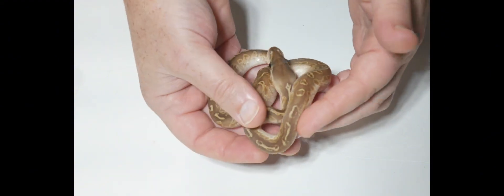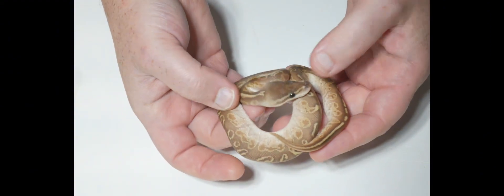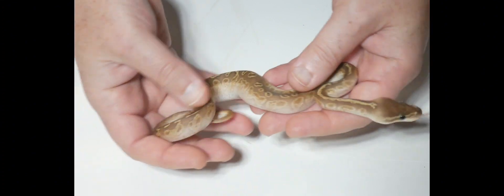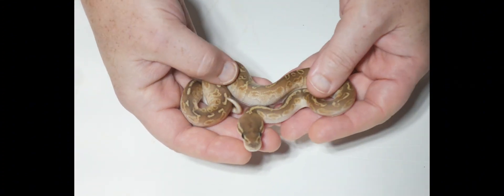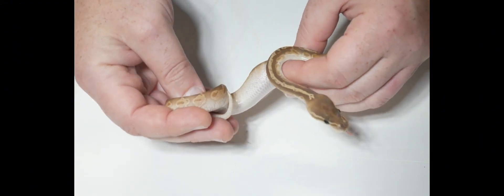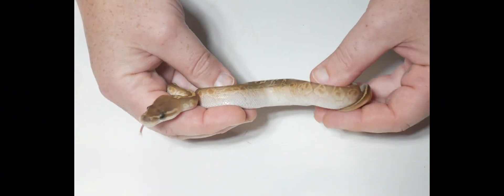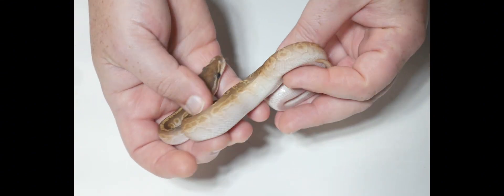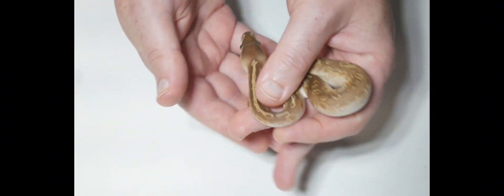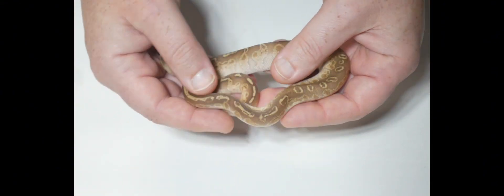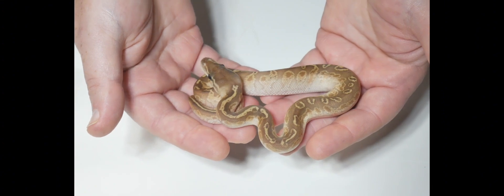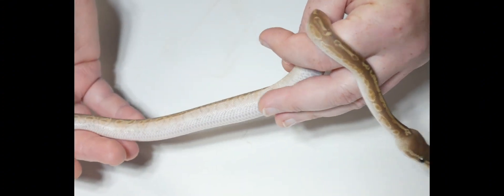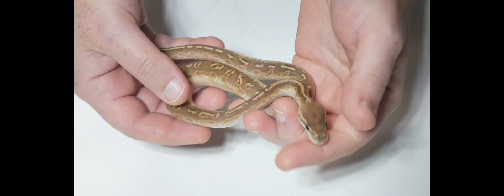All right, here is number six. So this one we currently have as a holdback. We want to see how it colors up because we kept a lesser sunset earlier this season. This one I first thought maybe it was going to be a pastel, but I don't believe so. I think this is just a lesser sunset. It is a female. Man the color is so cool on this thing but it's not a Coral Glow. It is a female lesser sunset. I'm going to say at this moment we're still going to hold on to it for a little bit, but I do believe this will eventually be available.